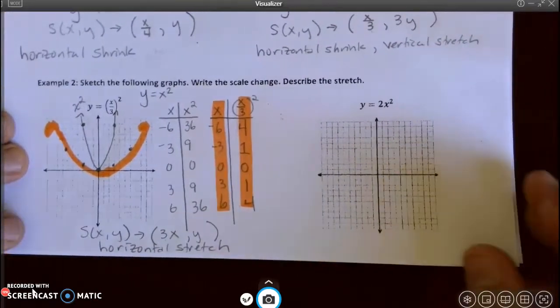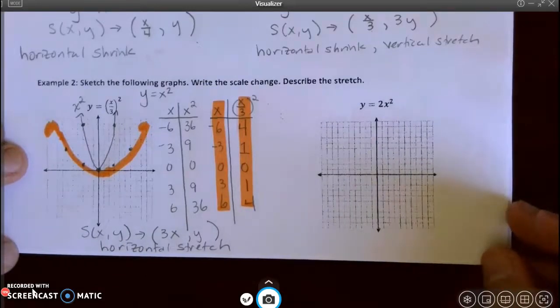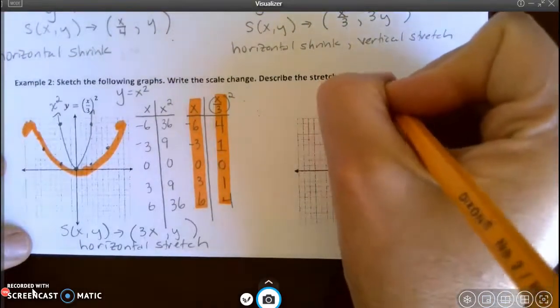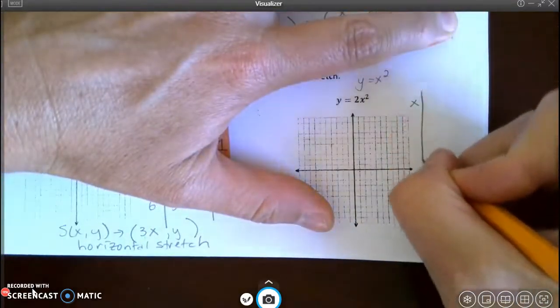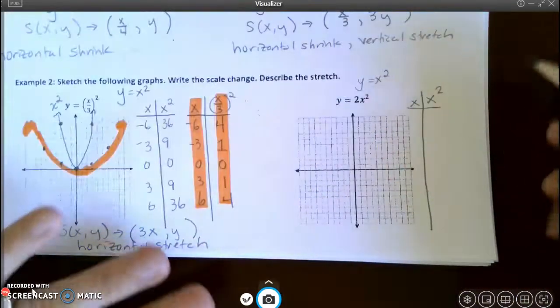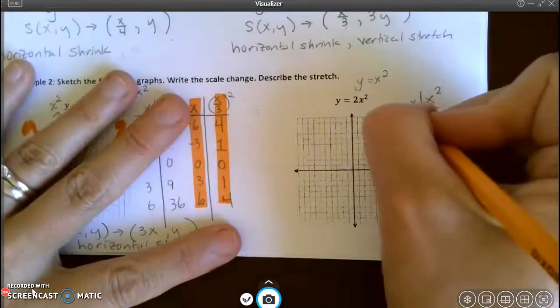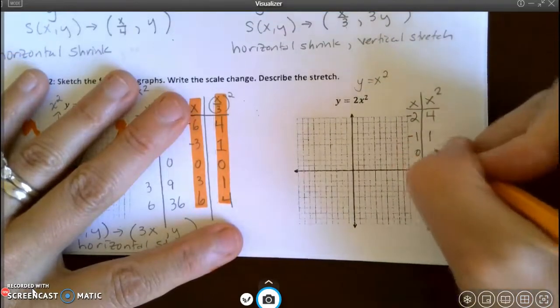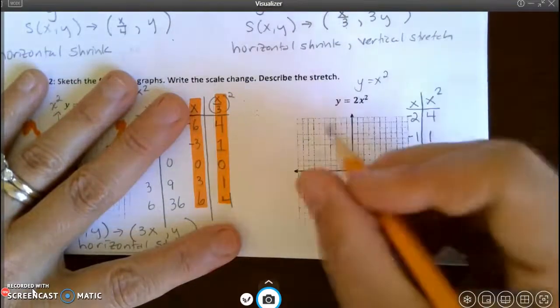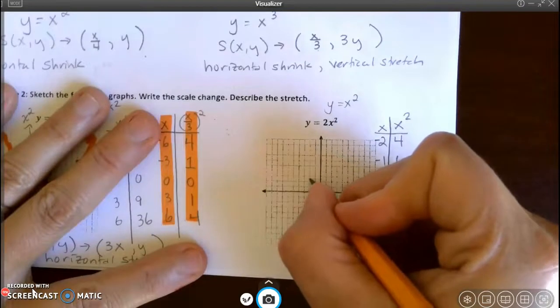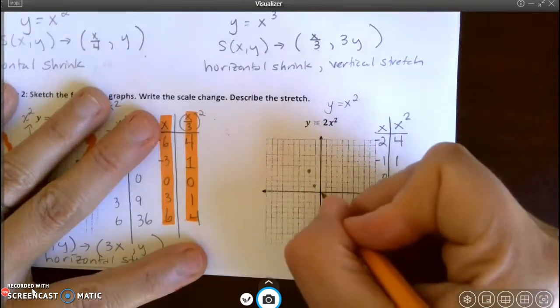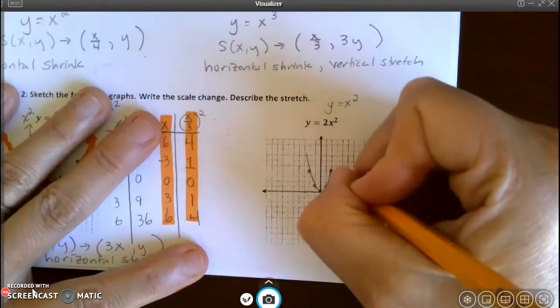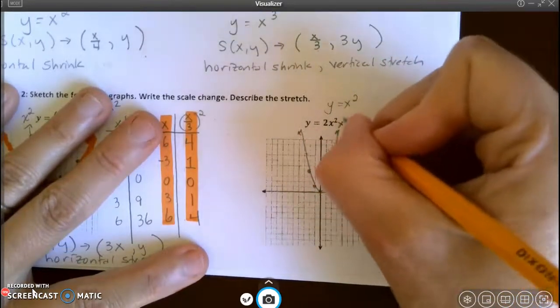All right, so let's look at the next one. In our next graph, I'm going to again start off with my parent function, which is going to be my y equals x squared. It's going to be my parent function again, that quadratic. And so I'll do my x and my x squared. And this time, I'm going to choose just negative 2, negative 1, 0, 1, and 2. Square each one of those. And I'm going to graph my parent. So here is my parent function. Okay, that's my parent.